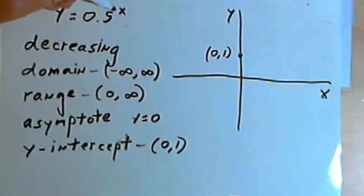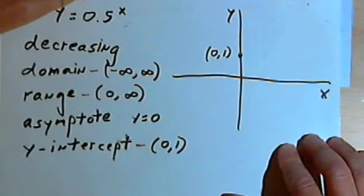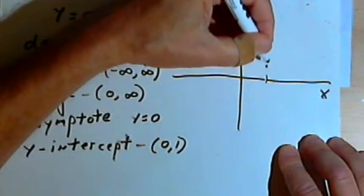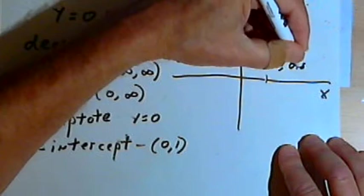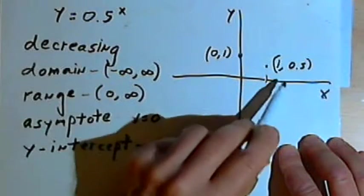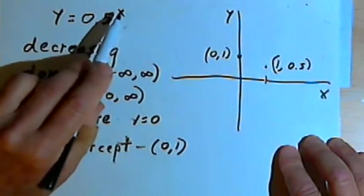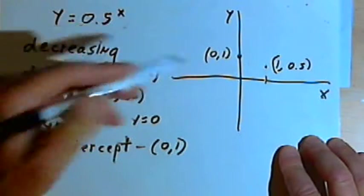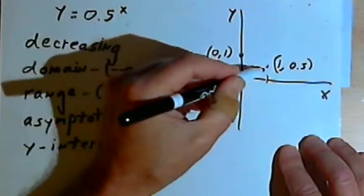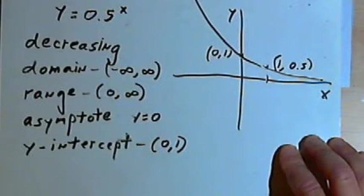So let's figure out what happens when x equals 1. When x is 1, 0.5 to the 1st power is going to be 0.5. So I'll have a point at 1, 0.5. Notice that when x is 1, you're going to have a point at 1 comma and then whatever the base happens to be. I've got these two points, I know where the horizontal asymptote is, I know how this curves, so I'm just going to put in a rough sketch of the graph.